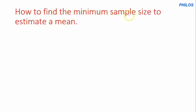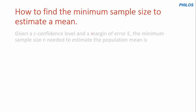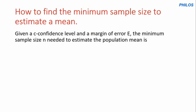Now let's look at how to find a minimum sample size to estimate a mean. Remember in the formula for confidence interval, the part where you have z times standard deviation over root n is called margin of error, and we use e to represent it. Given a confidence level c and a margin of error e, the minimum sample size n needed to estimate the population mean is n equals z times standard deviation over margin of error, all squared.